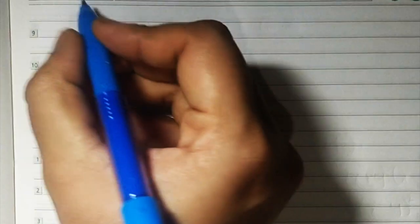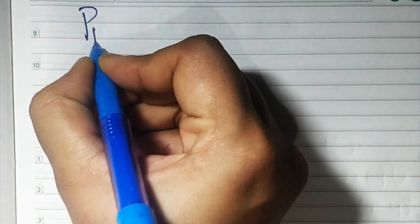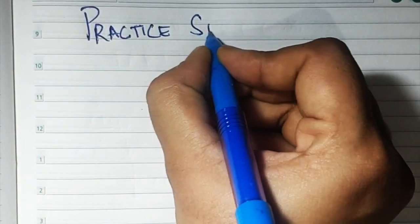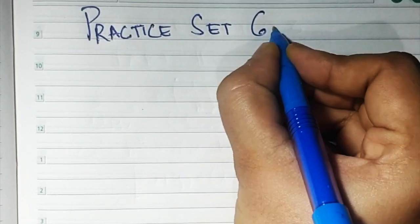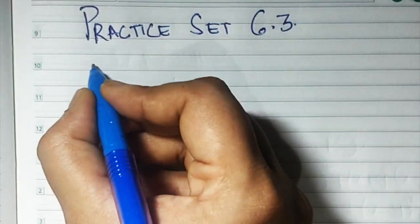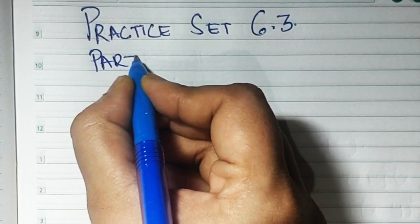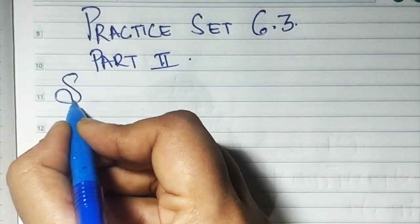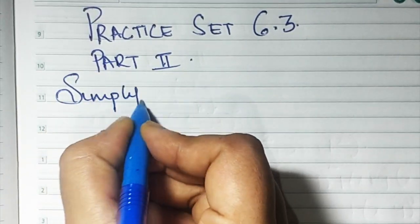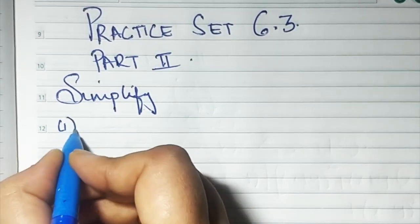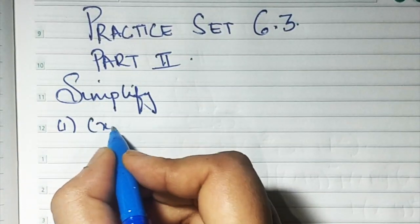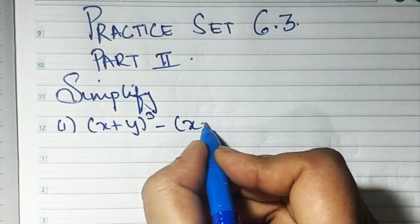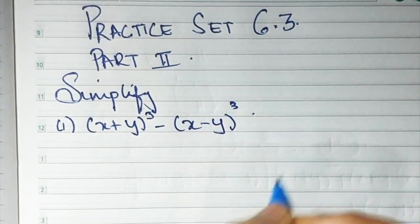Chapter number 6, practice set 6.3 part 2 — simplify. The first sum: it is (x + y) the whole cube minus (x - y) the whole cube.